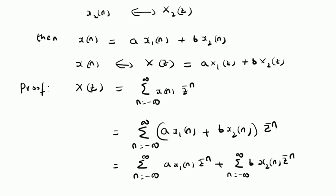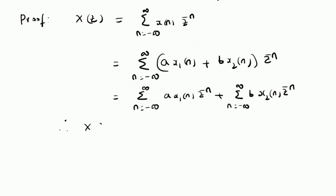That is, it equals summation n equals minus infinity to plus infinity of a times x1 of n times z power minus n, plus summation n equals minus infinity to plus infinity of b times x2 of n times z power minus n. And by definition, x1 of z is the Z-transform of x1 of n, so this term becomes a times x1 of z, and this term becomes b times x2 of z. Therefore, the Z-transform of the combined signal x of n is a times x1 of z plus b times x2 of z. The linearity property is proved, and it directly follows from the definition of the Z-transform.